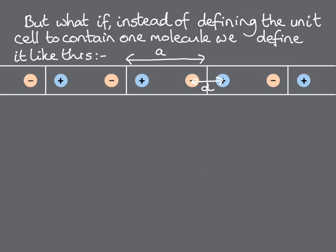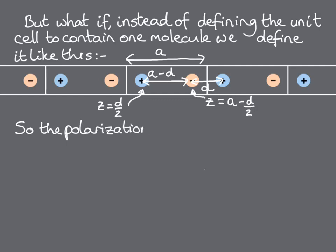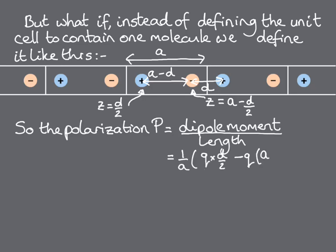The chain still consists of alternating anions and cations with a distance of d between the nearest neighbors. Taking position z equal to zero to be the left edge of the unit cell, then our cation is at z equals a half d, and the anion is at z equal to a minus d over two. So, working out the polarization by summing over the charges on the ions times their positions and dividing by the length of the unit cell gives us 1 over a times q times d over 2 minus q times (a minus d over 2), which is equal to qd over a minus q.